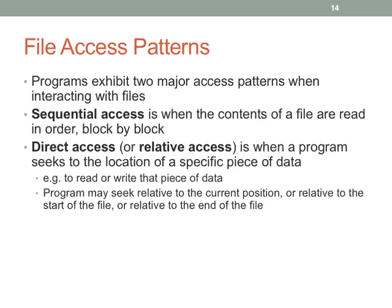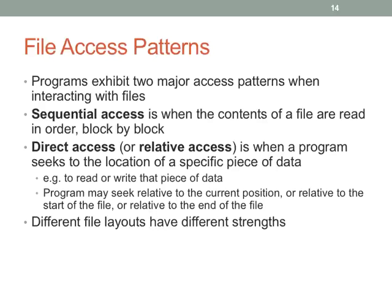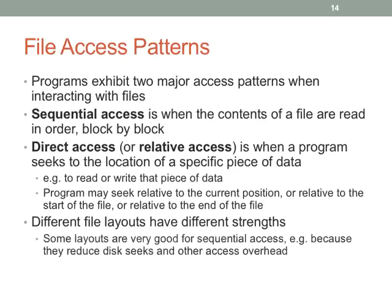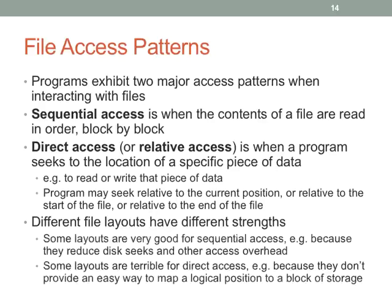If you're wondering why file system data structures are so complex — for example, why NTFS uses B-trees for accessing data files — it's so they can do both sequential and direct access efficiently. Different file layouts have different strengths: some are good for sequential access, some avoid fragmentation really effectively, and some don't avoid fragmentation very well at all.